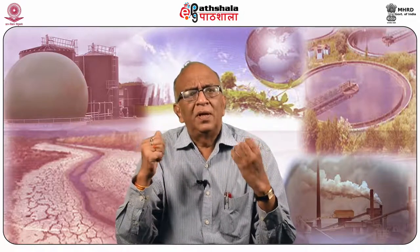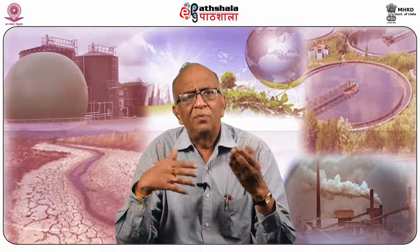The term Greenhouse Effect was first coined by Fourier in 1827. It is also called atmospheric effect, global warming, or carbon dioxide problem, because initially it was considered that this global warming is due to the excess of carbon dioxide present in the atmosphere. The earth is heated by sunlight and some of the heat absorbed by the earth is radiated back into space.